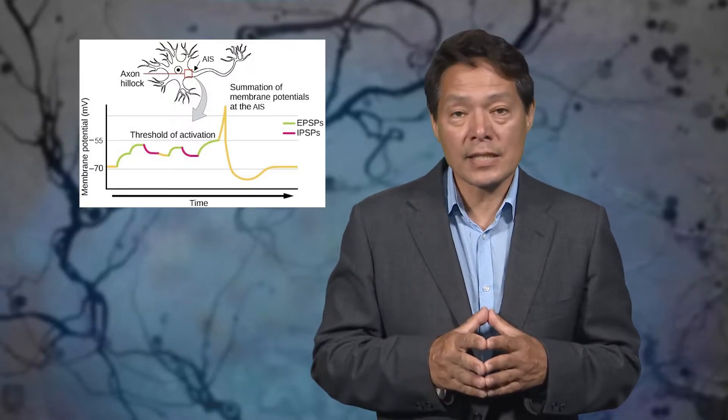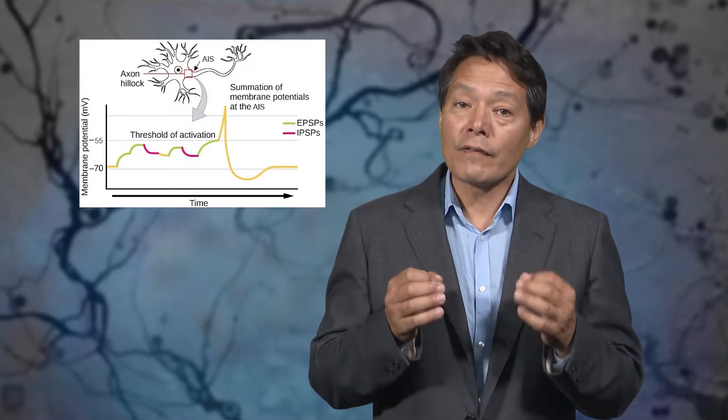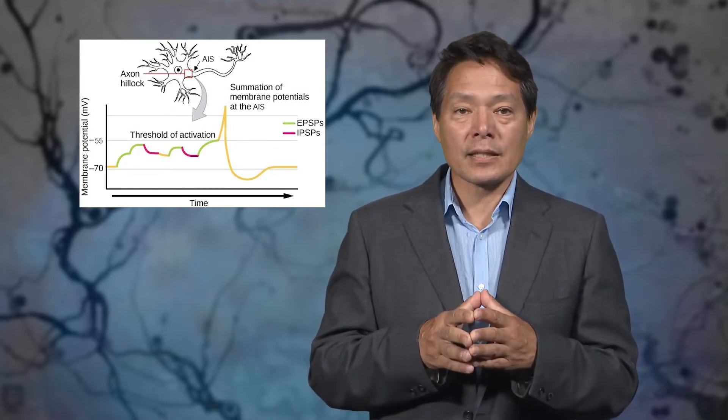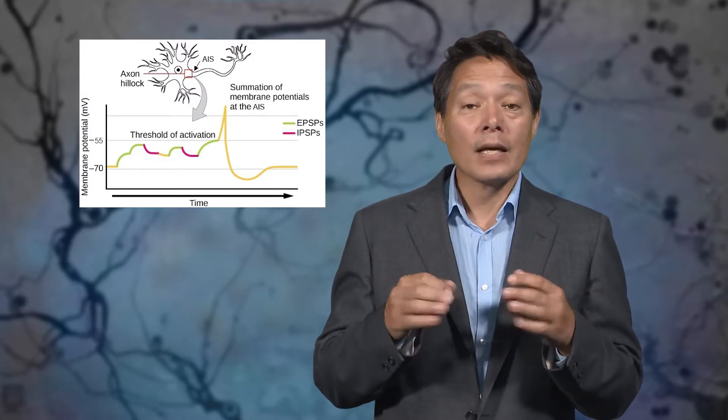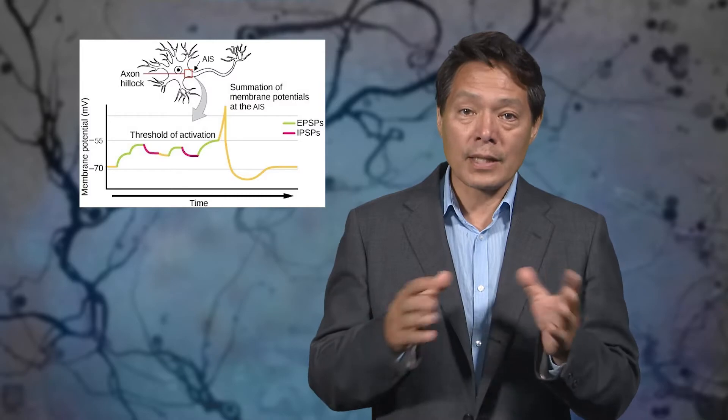In fact, the final decision whether to fire or not is made at the axon hillock. If the firing threshold is reached at the axon hillock, then boom! An action potential is ballistically generated in an all-or-none fashion. There's no such thing as a partial action potential. It either happens or it doesn't.